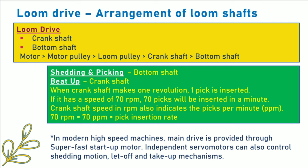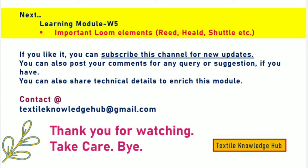In modern high-speed machines, the main drive is provided through a superfast startup motor. Independent servo motors can also control the shedding motion, let-off, and take-up mechanisms. In the next learning module W5, we will learn about important loom elements like reed, heald, shuttle, etc. If you like it, please subscribe to this channel for new updates. You can also post your comments for any query or suggestion, and share technical details to enrich this module. Thank you for watching. Take care. Bye.